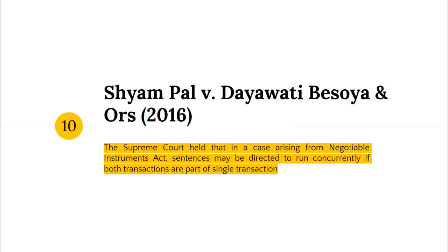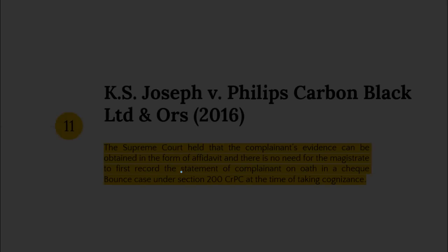Shyampal versus Deyavati Bisoya and Others, 2016 — the Supreme Court held that where multiple cases arise under the Negotiable Instruments Act, you can give directions for successive sentences to run concurrently — i.e., where both transactions are part of a single transaction, the court can direct that both punishments run concurrently.